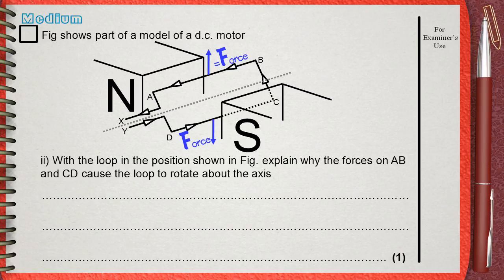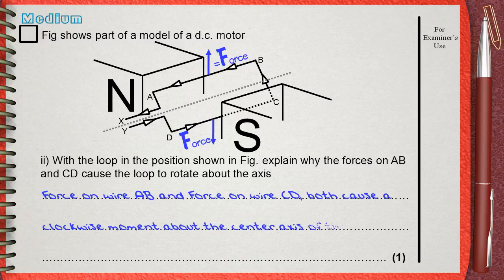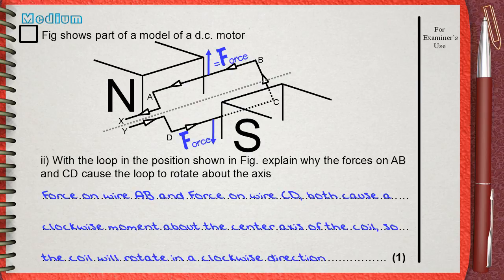Looks like a mechanics question, not an electricity one. Force on wire AB and force on wire CD both cause a clockwise moment about the center axis of the coil, so the coil will rotate in a clockwise direction.